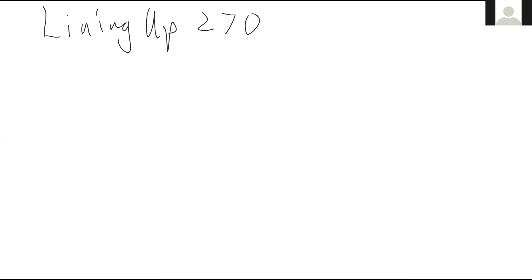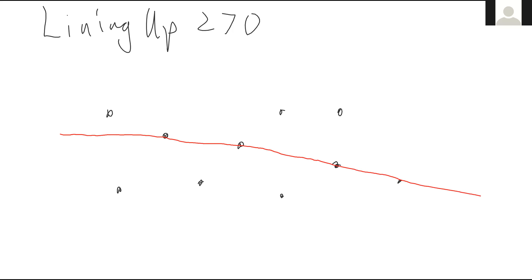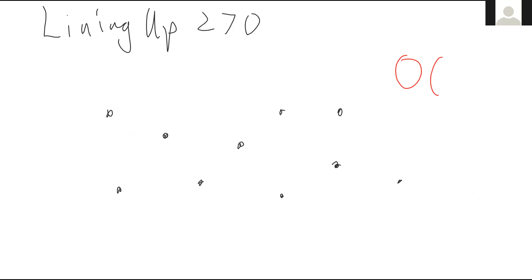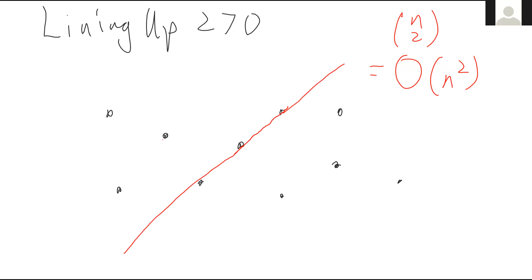So you're going to have a bunch of points. If they're all on a line to begin with, then of course you just draw a line and that's it. But the problem is they're not always on a line and you have to figure out which line contains the most number of points. Now, we know that every line is defined by two points. So one thing we can do by brute force is to look at all possible n-choose-two pairs of points, and for each pair, draw the line defined by those two points.